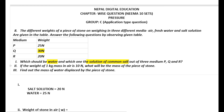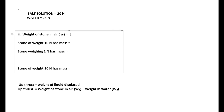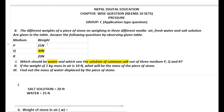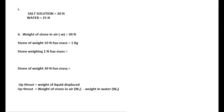Next, if the weight of 1 kg mass in air is 10 N, what is the mass of the stone? Weight of stone in air is 30 N. Since 10 N has mass 1 kg, then 1 N has mass 1/10 kg.